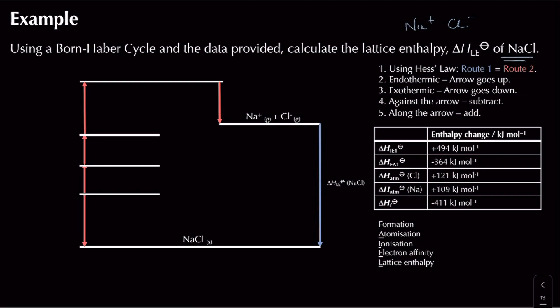The order we go in is: formation, atomization, ionization, electron affinity, to get the lattice enthalpy. Starting with sodium chloride as a solid, the first arrow is formation — where we look at our elements in their standard states that make up one mole of sodium chloride: sodium as a solid, and half a molecule of chlorine gas, because we need to balance and only have one mole of sodium chloride.